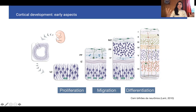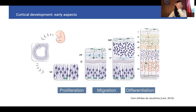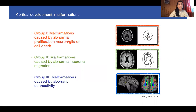After they are born, they differentiate, and finally they find their connections and their targets. We are very interested in these early aspects of cortical development, because if there are any perturbations disturbing these early aspects, this will generate cortical malformations.